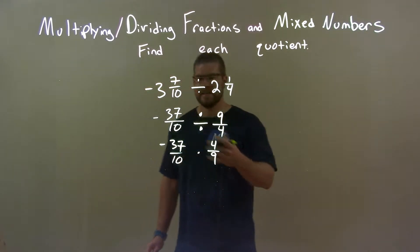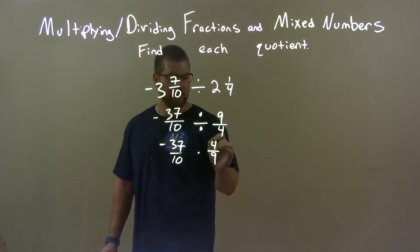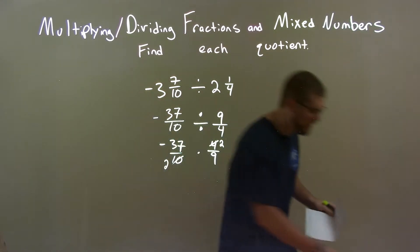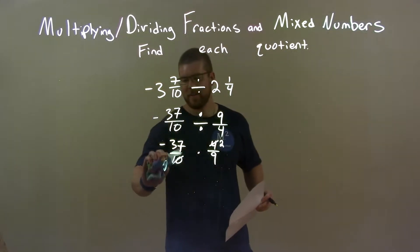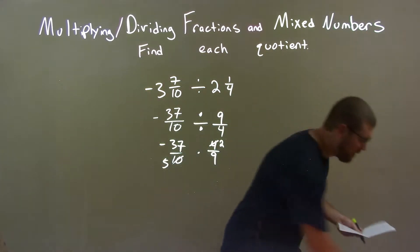Now I try to see, is there any way that I can simplify this? And yeah, I can. 10 and 4 are both divisible by 2. Oh, let's put 2 there. 10 divided by 2 is not 2, but it is 5. Excuse me. Alright, so we have 5 there.